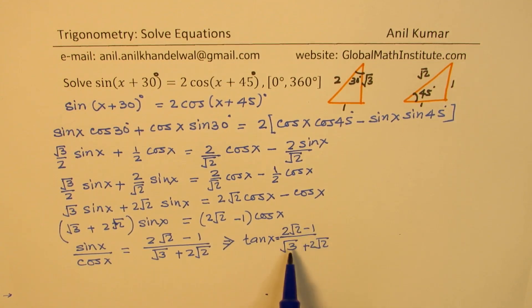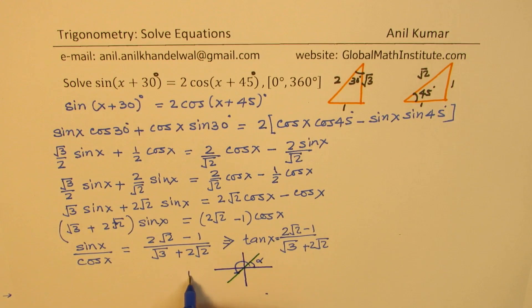So we have tan x equals to some value. Now 2√2 is positive, so all this is positive. So basically, what we are looking for here is two solutions. Tan x is positive in quadrant 1 and in quadrant 3. So we can find this angle, alpha, and the other angle will be 180 plus alpha.